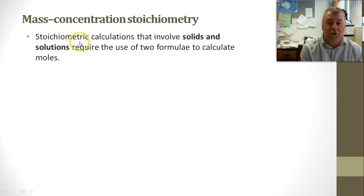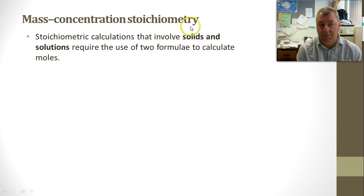Now, stoichiometric calculations that involve solids and solutions require the use of two formulas to calculate moles. Previously, when we did mass-mass stoichiometry, we only needed to use one formula to get our substances into moles. But now we're going to have to use that same formula when we're dealing with the solids, but we also have to use the formula for moles, n equals C times V, for the solution component of the reaction.